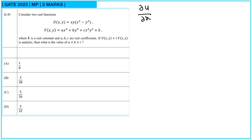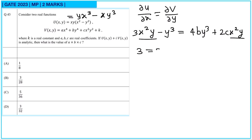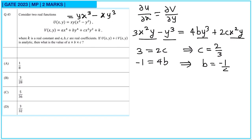The Cauchy-Riemann equation is ∂u/∂x = ∂v/∂y. With u(x,y) = y(x³ − xy³), we get ∂u/∂x = 3x²y − y³. Setting this equal to ∂v/∂y = 4by³ + 2cx²y, matching coefficients gives 3 = 2c, so c = 3/2, and −1 = 4b, so b = −1/4.